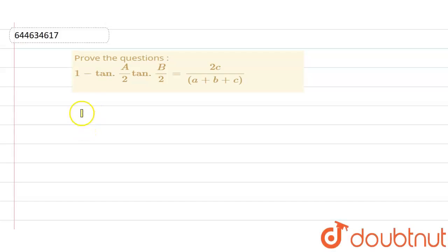Welcome to Doubtnut. The question given to us is: prove that 1 minus tan A by 2 tan B by 2 equals 2c divided by a plus b plus c. We have to prove that.